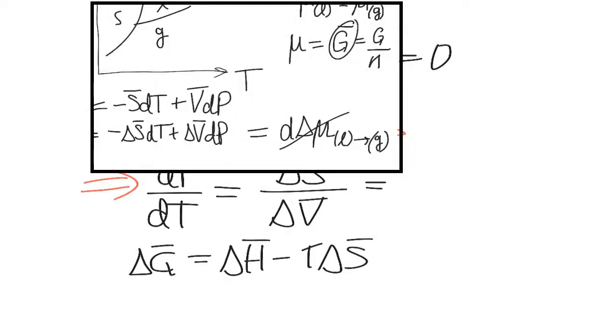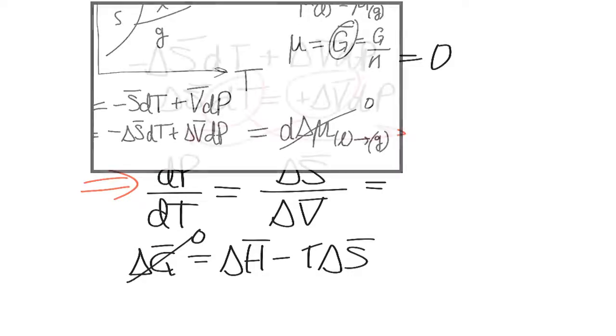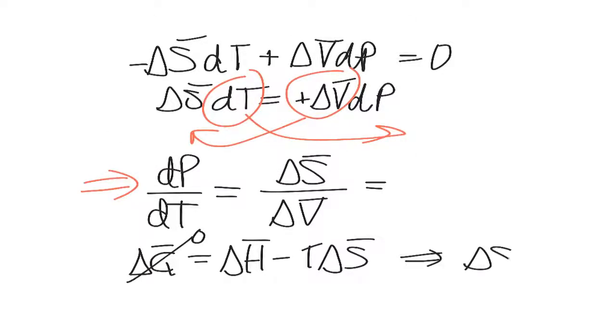But we said that it's equal to zero, so delta S molar is equal to delta H molar over T, where T is the temperature in Kelvin.